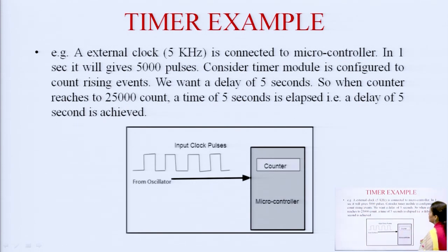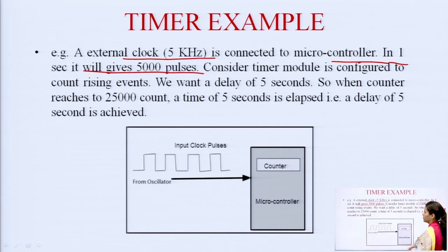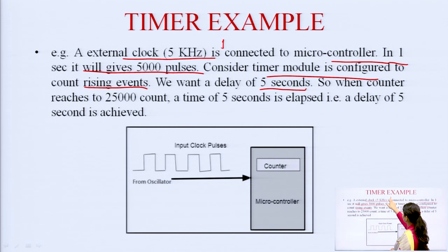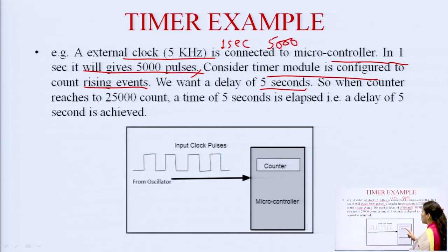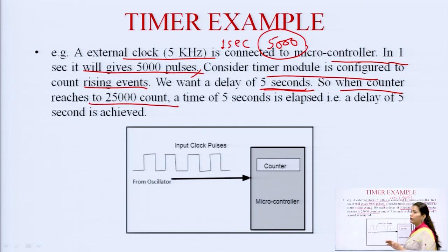For example, an external clock of 5 kilohertz is connected to the microcontroller, giving 5000 pulses per second. We have configured the timer module to count rising edge events. If we want a delay of 5 seconds, then when the counter reaches 25,000 count, we stop the timer. This is how we can get a delay of 5 seconds.